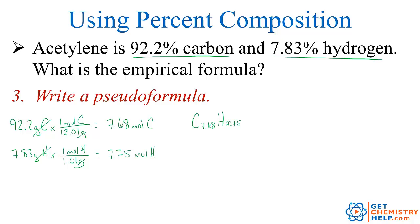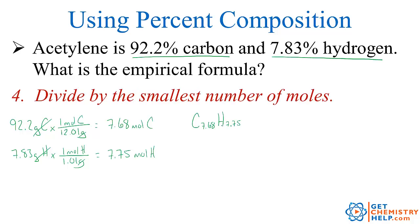These are not a whole number ratio, so we divide them both by the smallest — 7.68 — in an attempt to get the smallest whole number. I get carbon pretty much exactly 1 and hydrogen really close to 1. If your moles are within a hundredth or two, it's safe to round off, so I'll call this 1 to 1. CH would be the empirical formula of acetylene: a 1 to 1 carbon to hydrogen mole ratio.